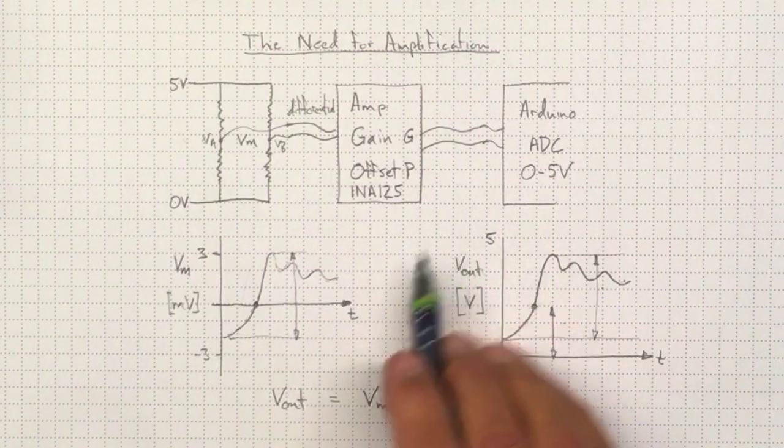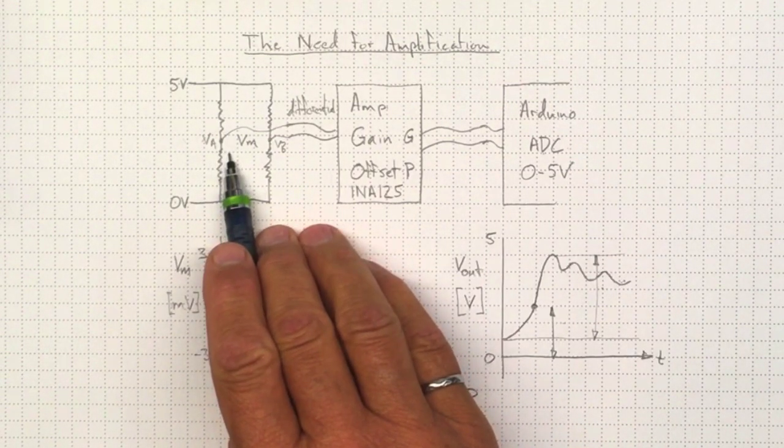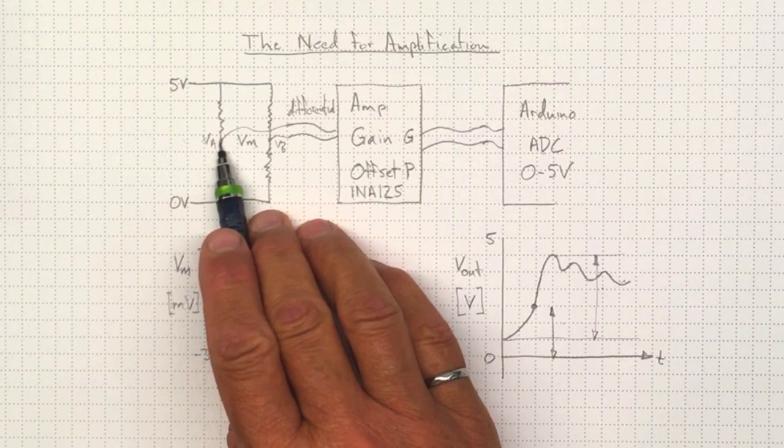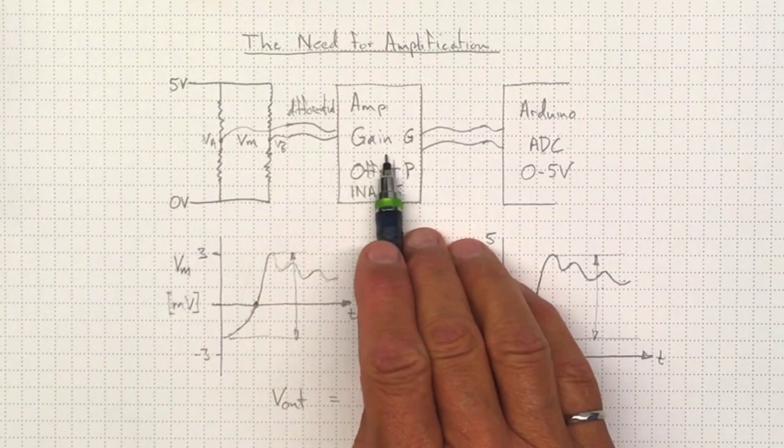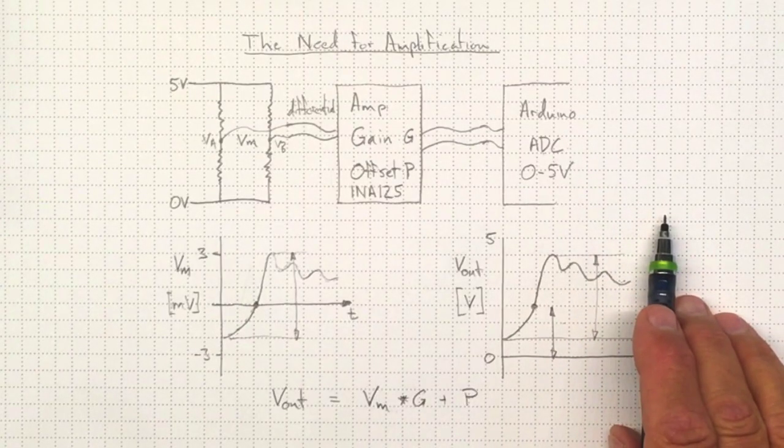So this need for amplification, you'll run into it over and over again because very often from bridge circuits which are measuring resistance, or from thermocouple circuits, or from any number of other small signal devices, we'll need to take that small signal and turn it into a larger signal in order to be able to read it with our analog to digital conversion.